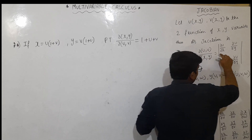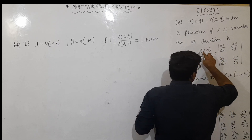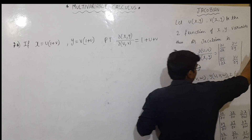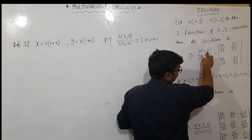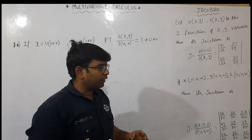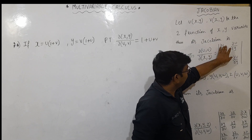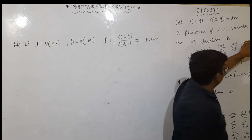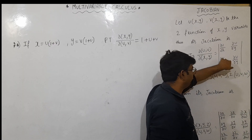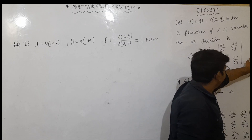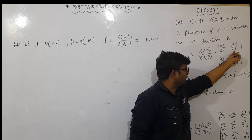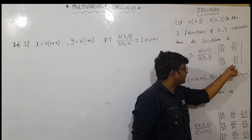The first term involves ∂u — partial derivation of u with respect to x and y. The second term involves ∂v — partial derivation of v with respect to x and y. So the Jacobian is a determinant with rows [∂u/∂x, ∂u/∂y] and [∂v/∂x, ∂v/∂y].